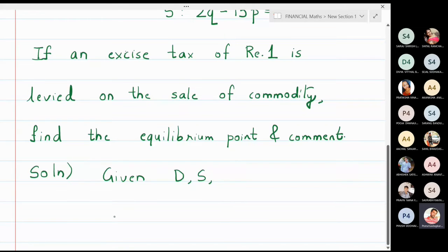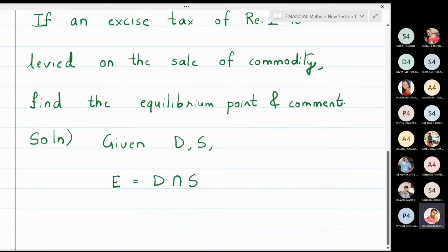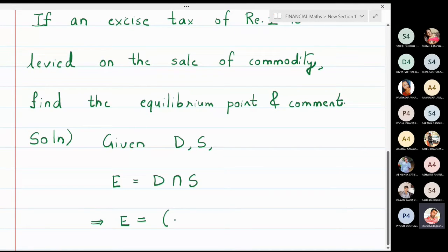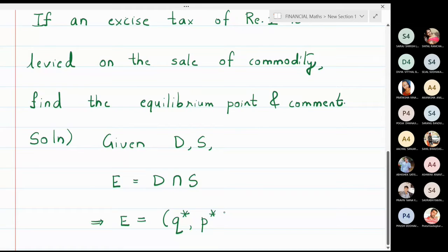The equilibrium point is the intersection of demand and supply. The equilibrium point E is (Q*, P*), where P* equals 4 rupees.